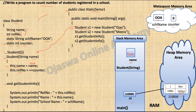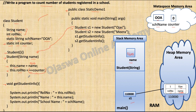After memory is reserved for the local variable, control comes inside and the code inside the constructor executes. 'this.name' is the instance variable name, equal to 'name', which is the local variable. The value of local variable name is 'Ojas', so the instance variable name will be assigned the value 'Ojas'. Now, the next statement — pay attention — is instance variable role number equal to ++counter. Plus-plus is an increment operator. There are two types: pre-increment and post-increment. Please refer to the video titled 'Operators' for more details.